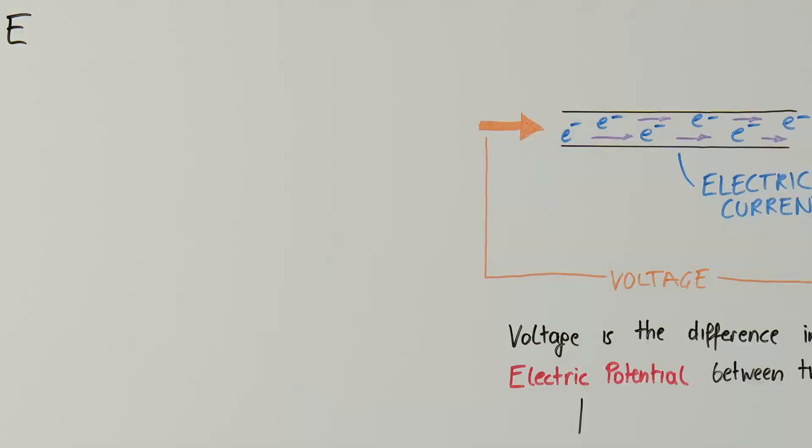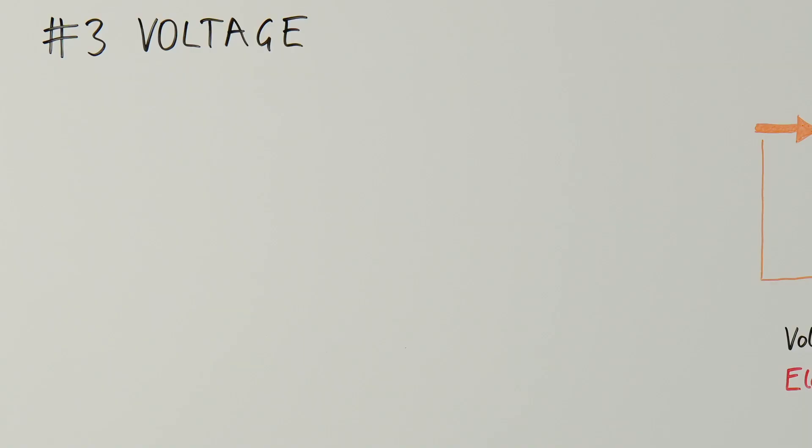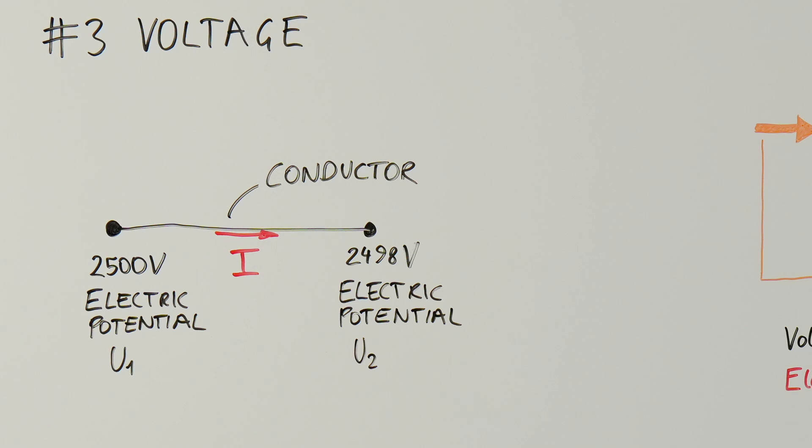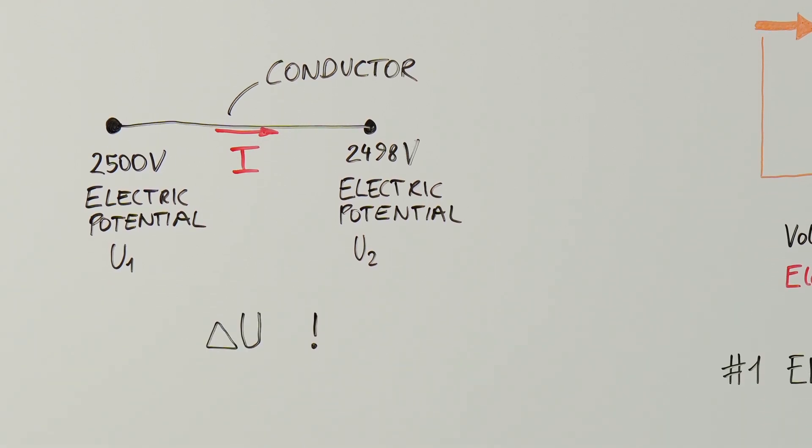The same is true in an electric circuit. The electric potential of one point won't tell us how much current will flow. In fact, if we only have one point, no current will flow at all. In order for electric current to occur, we have to connect a second point with a different electric potential to the first point through a conductor. The magnitude of the electric current solely depends on the difference in electric potential and not on the electric potential per se.